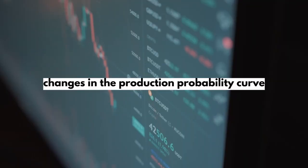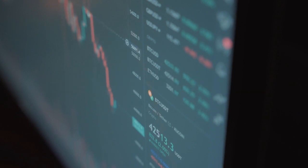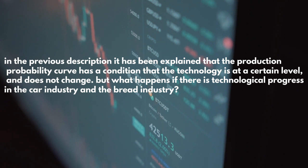Now, I want to explain to you about changes in the production possibility curve. In the previous description, it has been explained that the production possibility curve has a condition that the technology is at a certain level and does not change. But what happens if there is technological progress in the car industry and the bread industry?